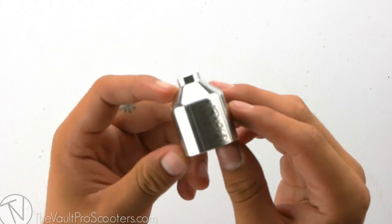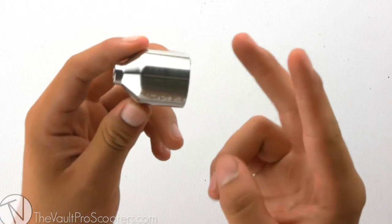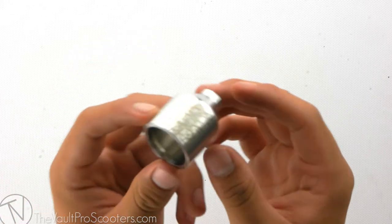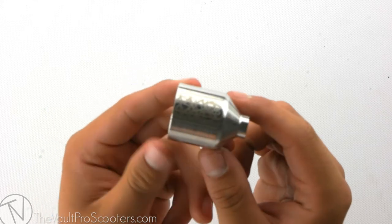To start off, this peg is sold individually, so if you're looking at getting a pair, make sure to put a quantity of two in your cart before checkout. Axles are not included with this peg, so you will also have to buy that separately.